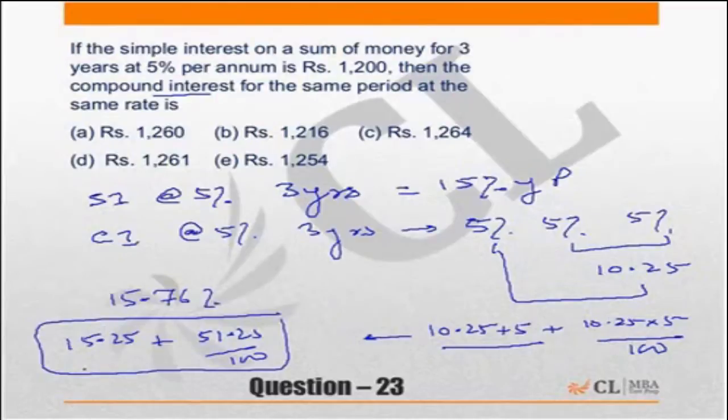On compounding you will get 15.76% of the principal. In other words, on simple interest you are getting Rs. 1,200. 15% is equal to Rs. 1,200. The question effectively means: 15% is Rs. 1,200, how much is 15.76%?